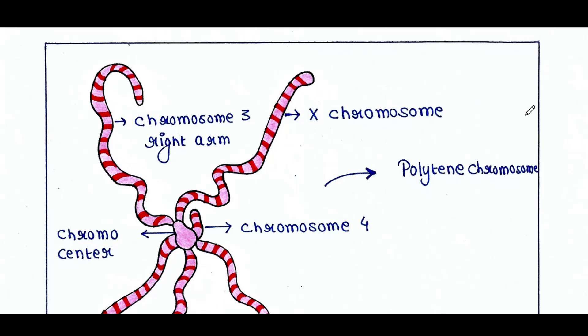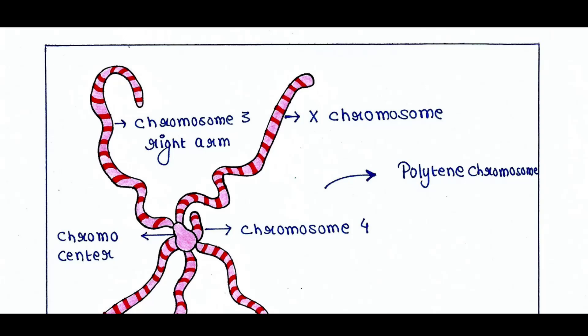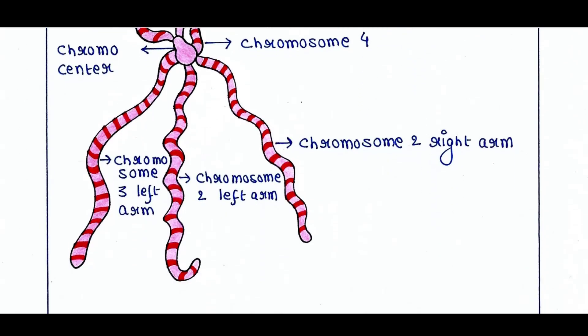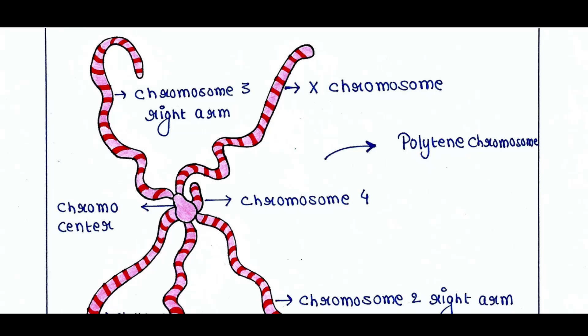This is the drawing of a polytene chromosome. Polytene chromosome is also called giant chromosome. Why is it called giant chromosome? Because its size is huge. So first let's see the morphology of this chromosome.